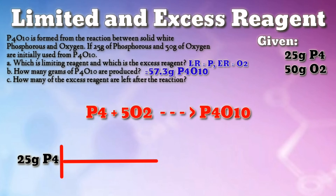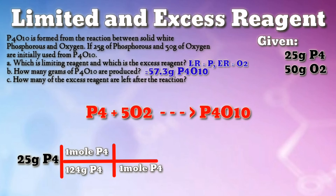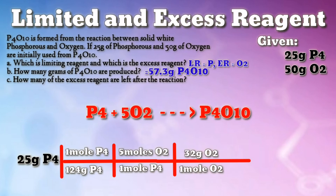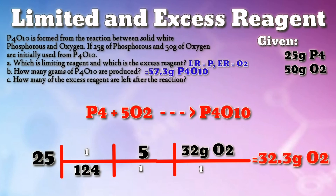Starting with 25 grams of phosphorus, divide by the molar weight of one mole of P4 (124 grams of phosphorus), then apply the stoichiometric ratio of phosphorus to oxygen gas from the balanced equation — 1 mole P4 to 5 moles O2 — and multiply by the molar weight of one mole of oxygen gas (32 grams). Calculation: 25 ÷ 124 × 5 × 32 = 32.3 grams of oxygen gas. That is the actual amount of oxygen gas used after the limiting reagent, phosphorus, is totally consumed.